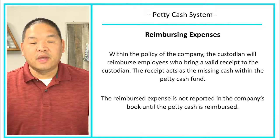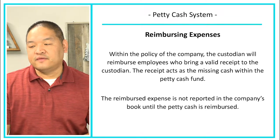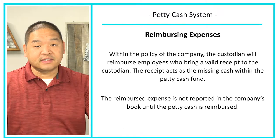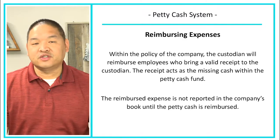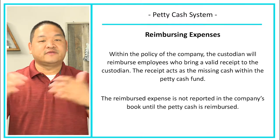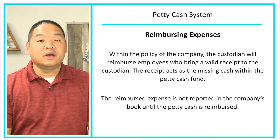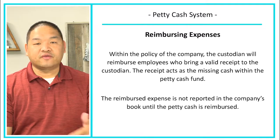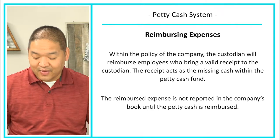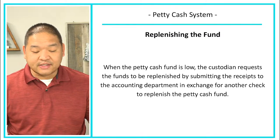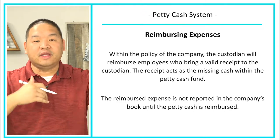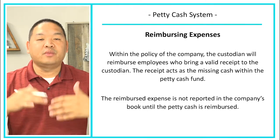Some companies have a rounding policy so the custodian doesn't have to make exact change. For instance, if someone brings a receipt for $4.95, it may be acceptable to give them $5.00 and deal with the five cents difference. There may be a policy that says anything under 45 or 40 cents can be rounded. Also importantly, reimbursed expenses are not recorded in the company's books when the receipt is received — we hold all receipts and book them when we replenish the fund.